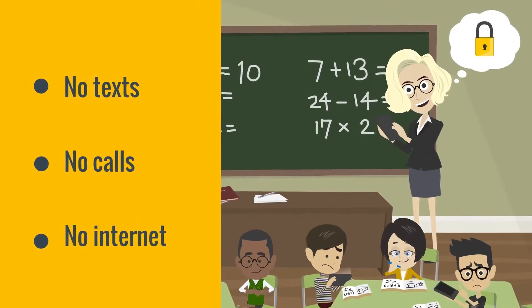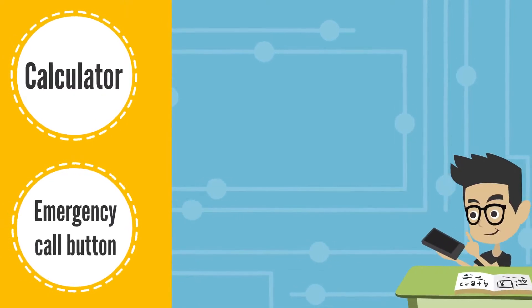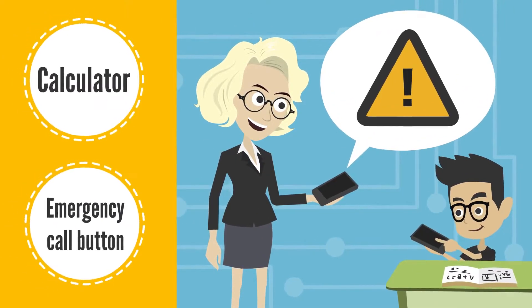Meaning no text, no calls, no internet, just the calculator and an emergency call button. Then, if a student does try to get out, it automatically alerts the teacher.